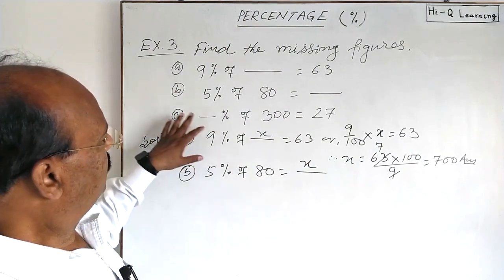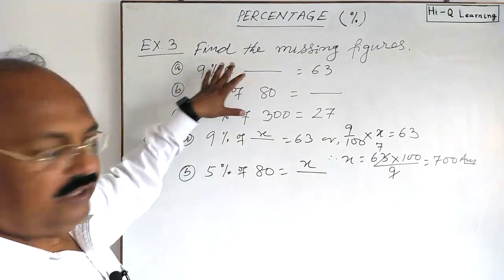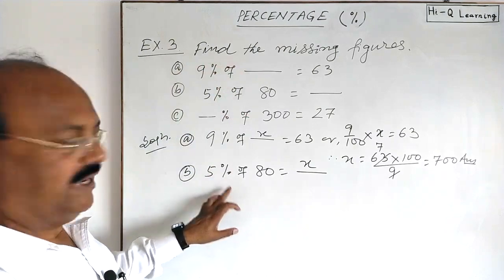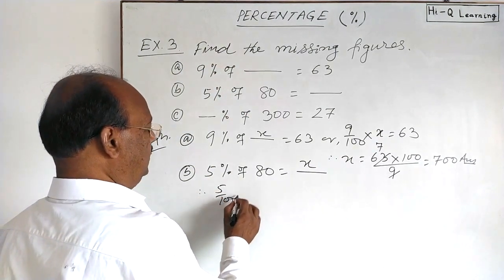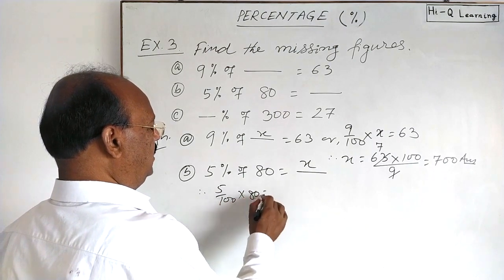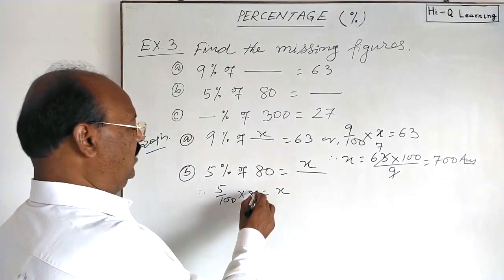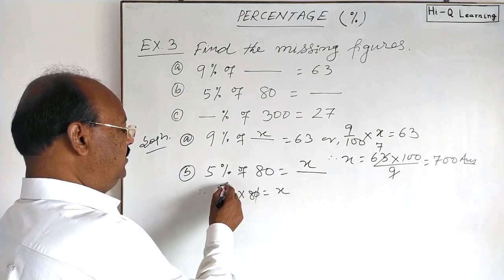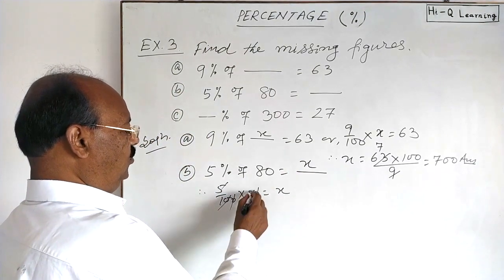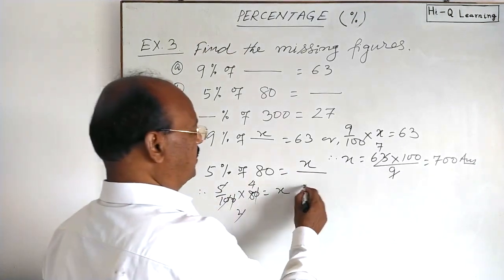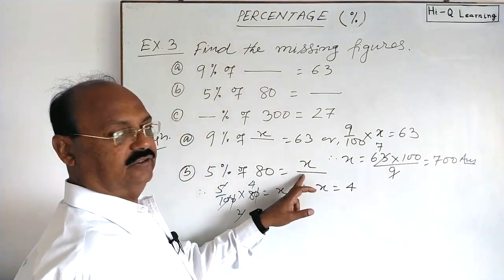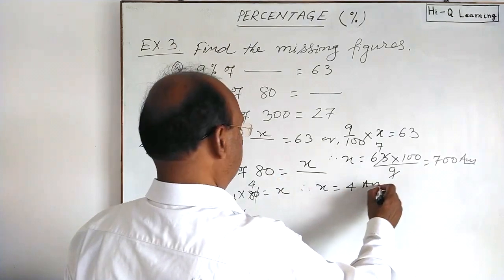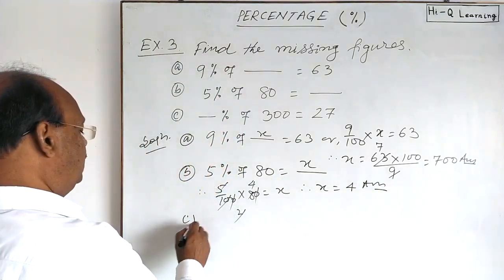As we solved question a, 5% means 5/100. Therefore, 5/100 × 80 = x. Let us simplify: the zero cancels, 5 × 8 = 40, divided by 10 = 4. So x equals 4. The missing figure is 4, this is the answer.